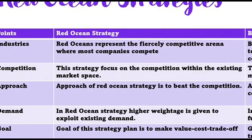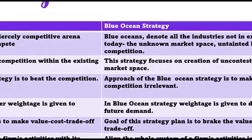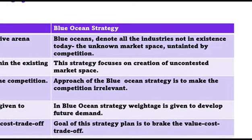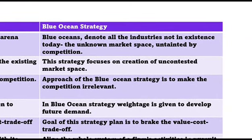The first point of difference is regarding industries. In Red Ocean Strategy, the red ocean represents a fierce competitive area where most companies compete — many industries representing each sector competing amongst themselves. In Blue Ocean Strategy, blue ocean denotes all the industries not currently in existence today — unknown market space untouched by competitors.